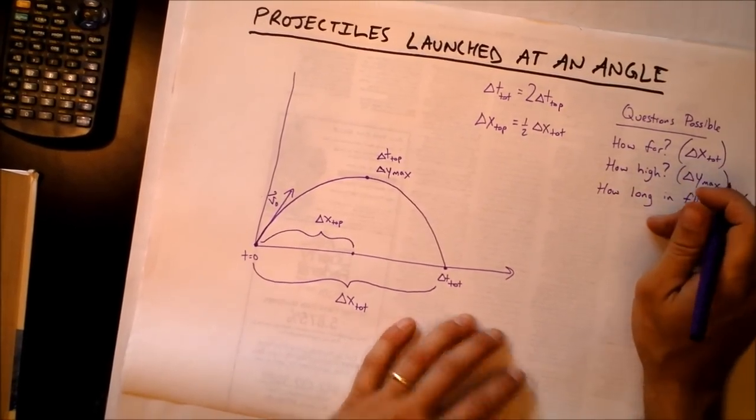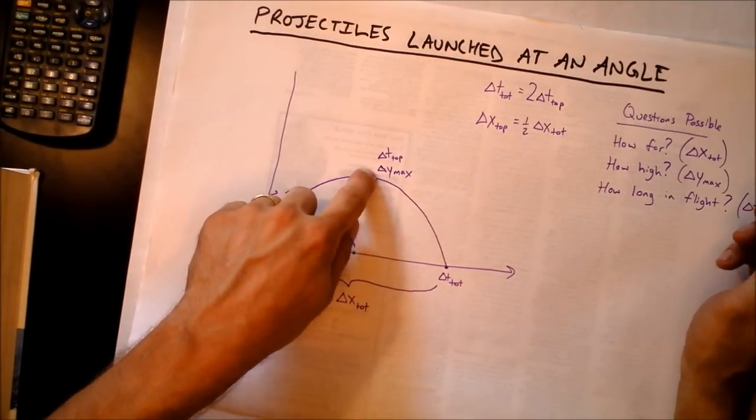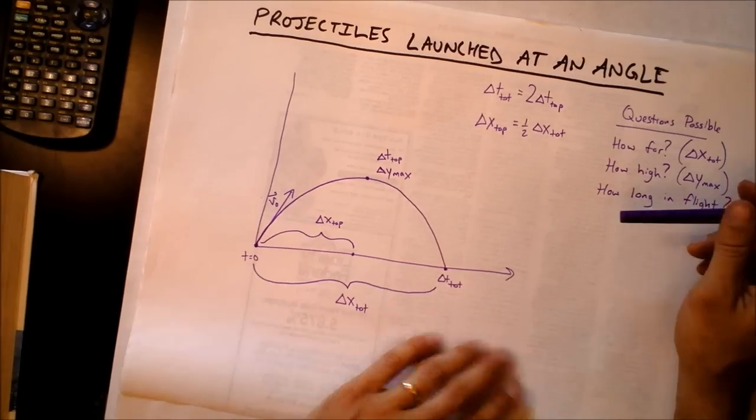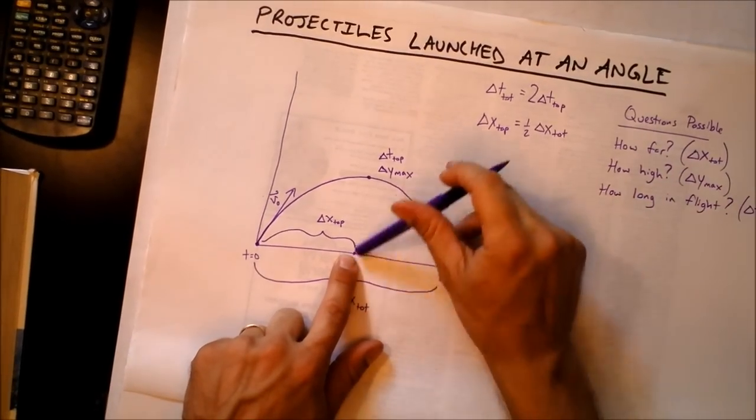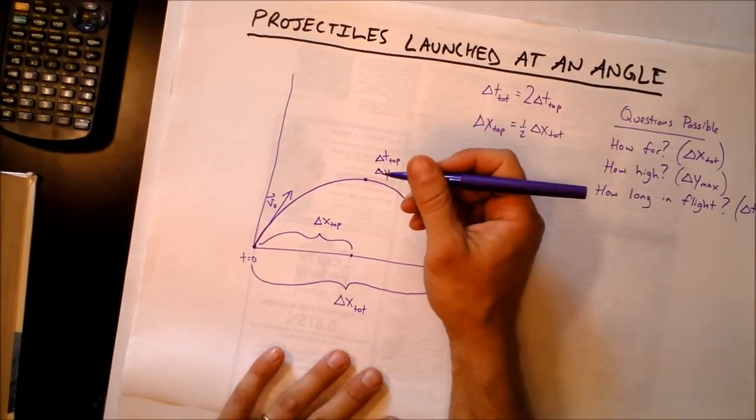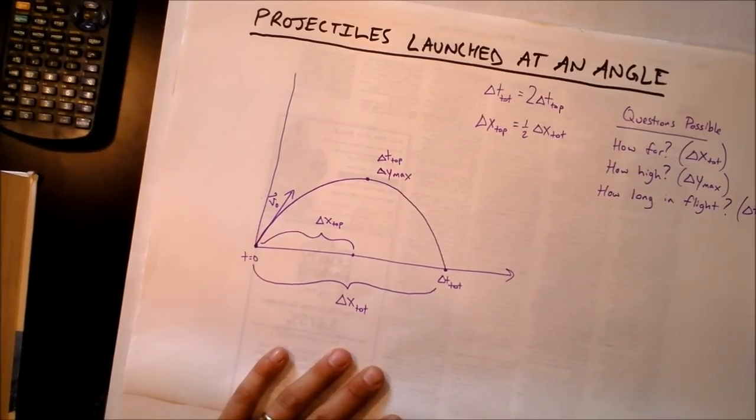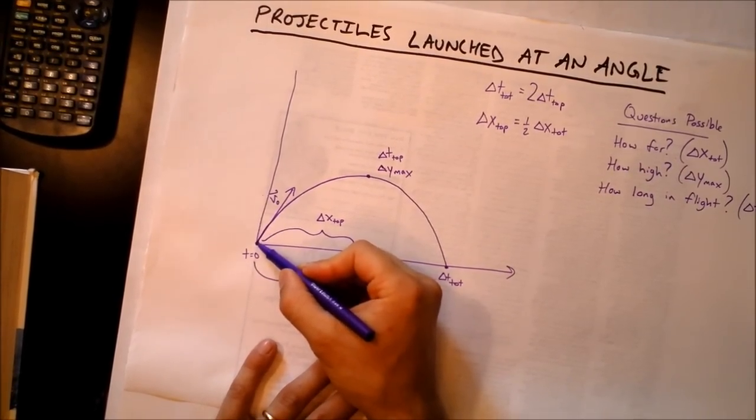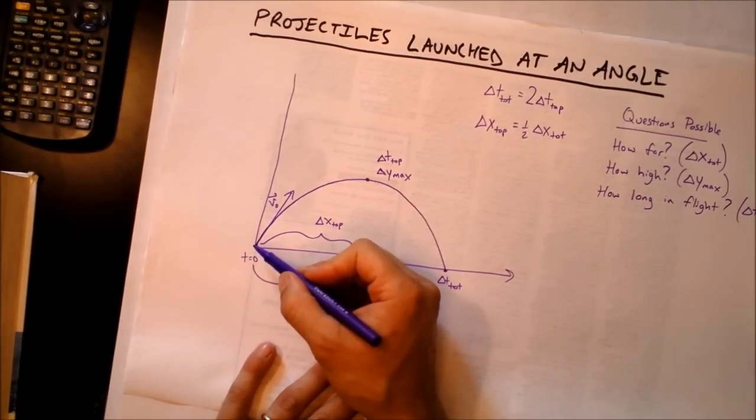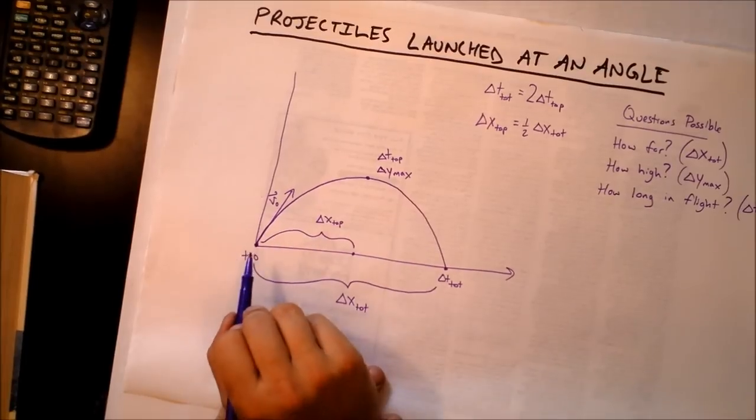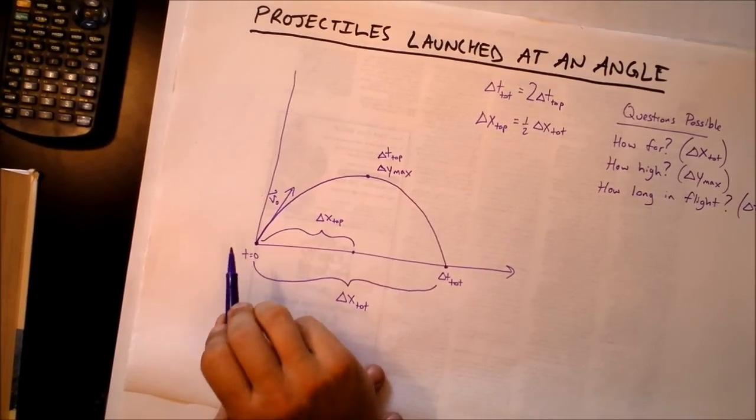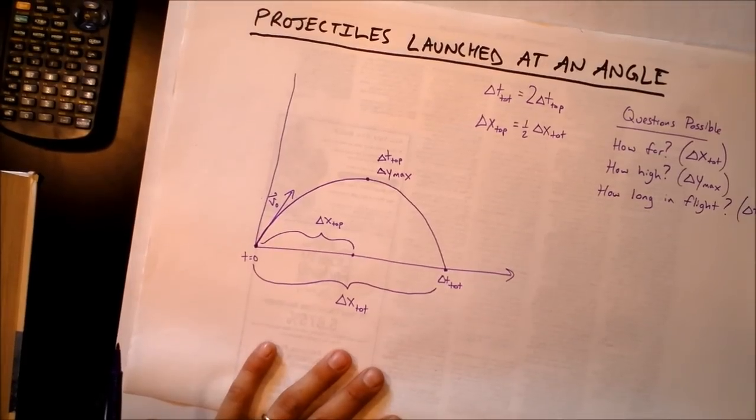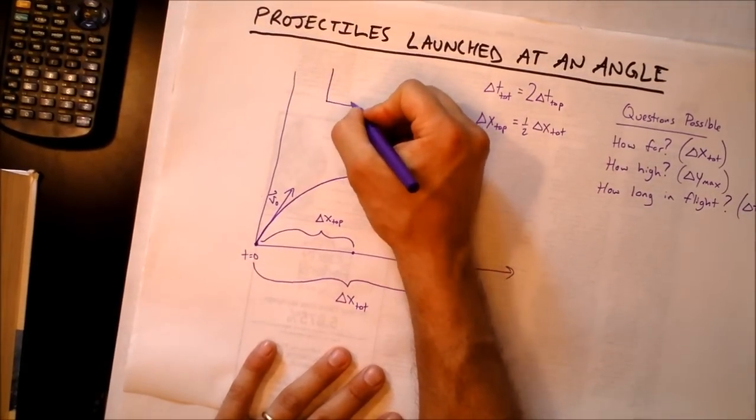That would be delta t total. They could also ask us things like how much time does it take to reach the peak and how far does it go horizontally when it's at its peak, so we could ask for the coordinates of this location right here. But basically what you need to remember is that as soon as the volleyball that's on fire leaves your hand, the volleyball will be moving at a steady speed in one direction and its speed will be changing in the other direction.